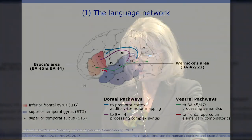With respect to the language network, we know quite a bit. We know that there are fiber tracks that connect Broca's area and Wernicke's area, and we have some idea about what these fiber tracks are doing. The dorsal fiber track, color coded in purple, goes from BA44 to the posterior temporal cortex and is supposed to support syntactic processes. For the ventral part, the fiber track goes from BA45 to the temporal cortex and is supposed to support semantic processes.